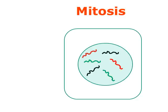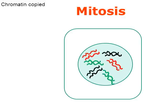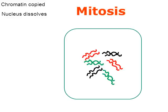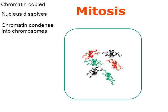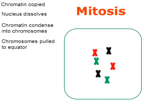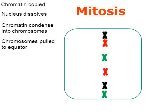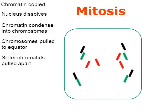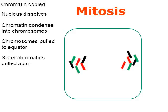Here we have a cell, and it's going to go through mitosis. First, the chromatin is going to be copied. Next, the nucleus is going to dissolve. Then the chromatin is going to condense into chromosomes — the strands of chromatin condense into the X-shaped chromosomes. Next, the chromosomes are going to be pulled to the equator of the cell — the equator just means the middle — pulled there by spindle fibers. The next thing is the sister chromatids are going to be pulled apart by spindle fibers.